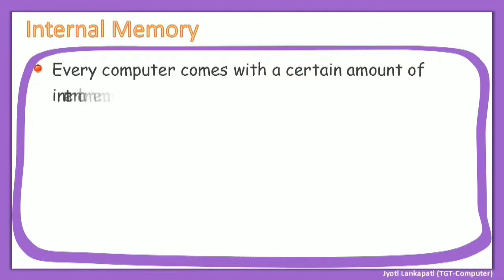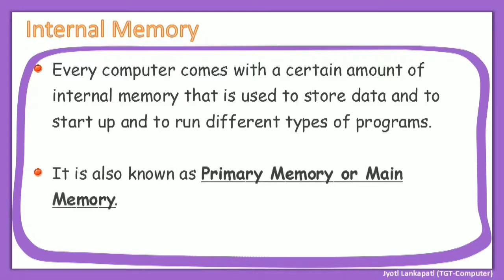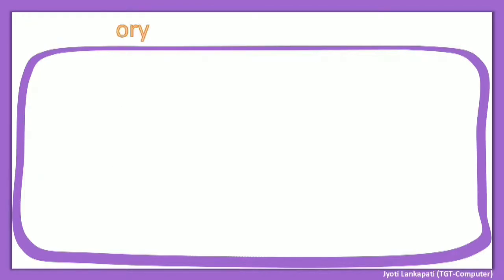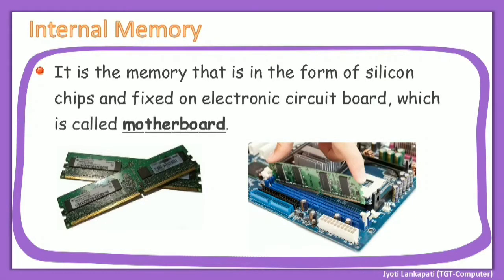Every computer comes with a certain amount of internal memory that is used to store data and to start up and run different types of programs. It is also known as primary memory or main memory — it is the computer's built-in memory. It is in the form of silicon chips fixed on an electronic circuit board called the motherboard. As shown in the figure, the memory chip on the left is attached to the motherboard on the right.